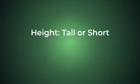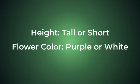Once again, the height can be tall or short. The flower color can be purple or white, and for that trait, purple is going to be the dominant one and white is recessive. So we use big P for the dominant purple allele and little p for the recessive white allele. Just a note — the letter that we use is usually the first letter of the dominant trait.